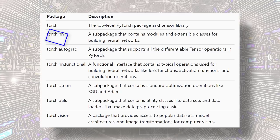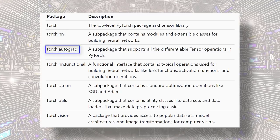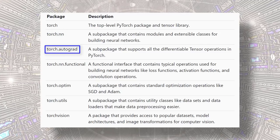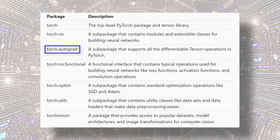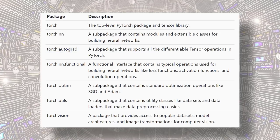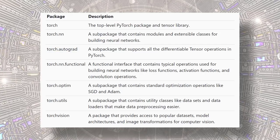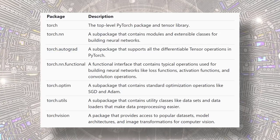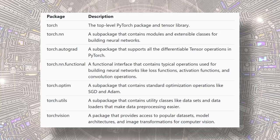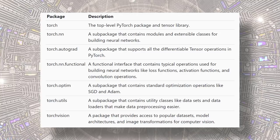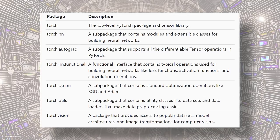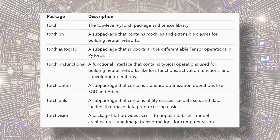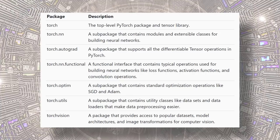torch.autograd is a sub-package that handles the derivative calculations needed to optimize our neural network weights. At their core, all deep learning frameworks have two features: a tensor library and a package for computing derivatives. For PyTorch, these two are Torch and torch.autograd.